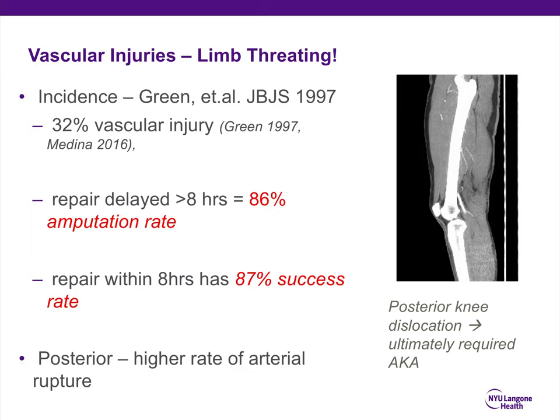In terms of vascular injuries, these are limb-threatening injuries. There's about a 32% rate of vascular injury to the popliteal artery, as shown by several studies. The key is getting to these early and repairing them, because if you repair them before eight hours of ischemia time, the success rate in limb salvage is 87%. With posterior dislocations, there's a higher rate of arterial rupture. One patient had a complete rupture of the popliteal artery at the level of the tibiofemoral joint, which ultimately required an above-the-knee amputation.